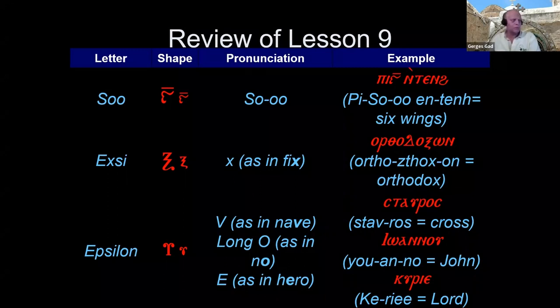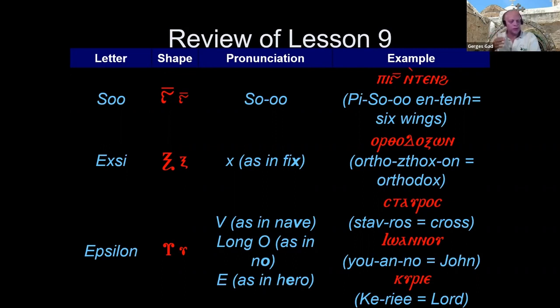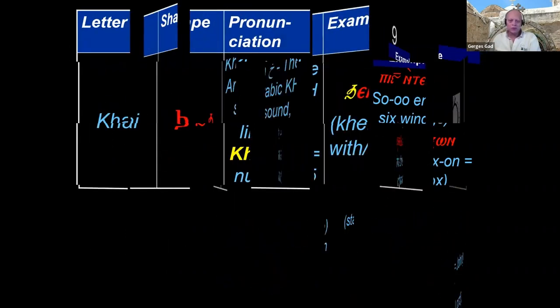Yes, so the Epsilon, as Marala reminded us, it's probably the most complex letter. It is a vowel and it depends on the letter before it. If the letter before it is an A or an E, then it's pronounced like a V. If it follows an O, it's an O. Anything else, it is an E. Good.